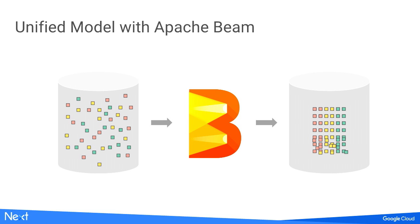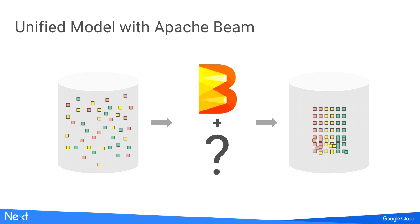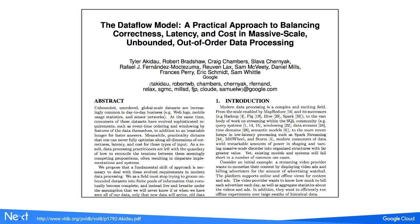The unified model lets you write your pipeline once in one way, and get low-latency but eventually correct results. It also allows you to choose the trade-offs you want to make — if you're okay using a batch processing engine on the back end and trading some latency for greater efficiency, you can do that. You get to make an informed decision balancing correctness, latency, and cost. We published a paper on this at VLDB in 2013 with details of the underlying model.